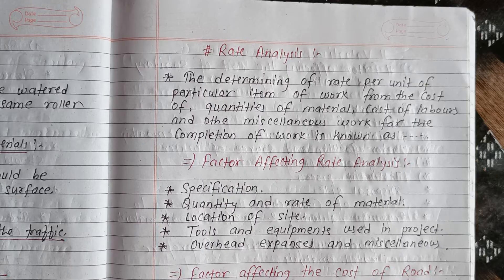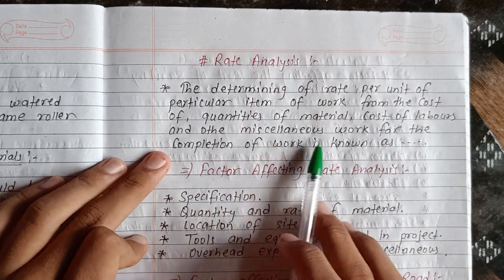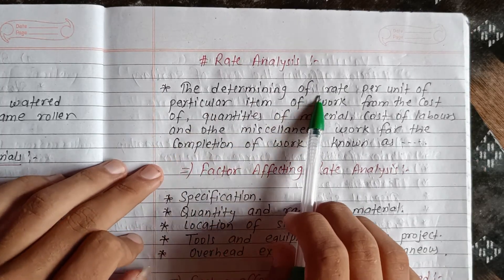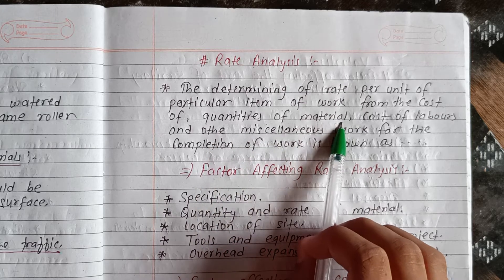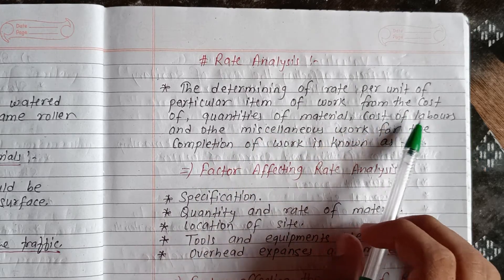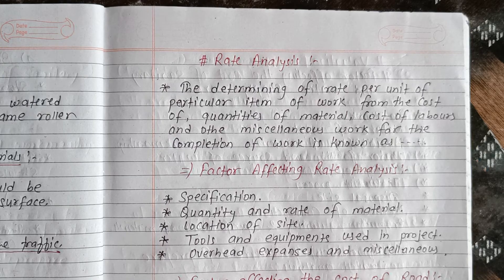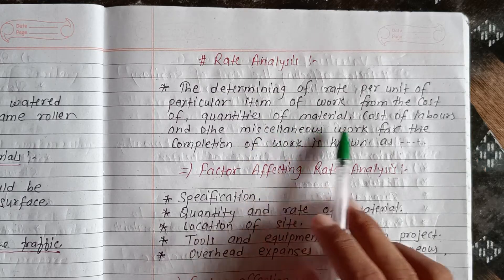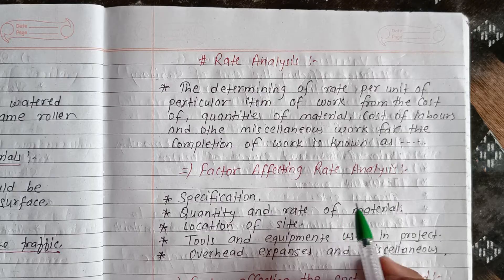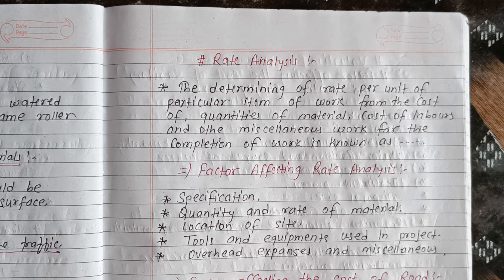We will start the video by explaining rate analysis. The determining of rate per unit of a particular item of work from the cost of quantities of material, cost of labour, and other miscellaneous work for the completion of work is known as rate analysis. We are going to include all of the cost and data of material and prepare a particular list of rates analysis.